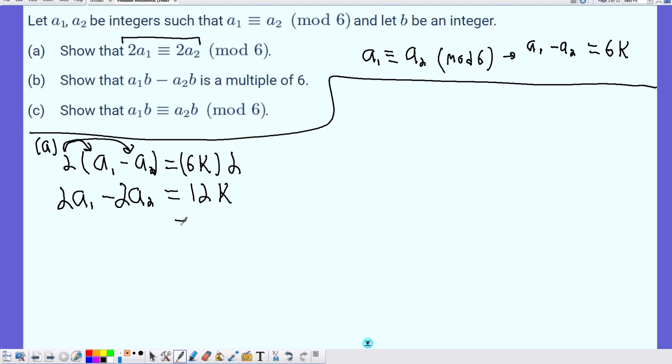This part can just be simply written, I'm kind of just going to do the reverse of what I just did, but we can think of this as 6 times 2K. And since K is an integer, 2 times K must also be an integer.